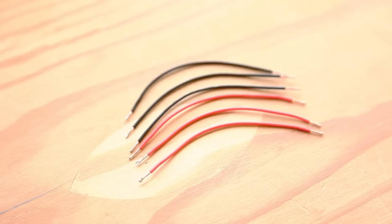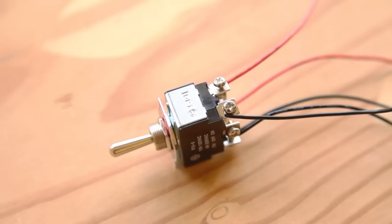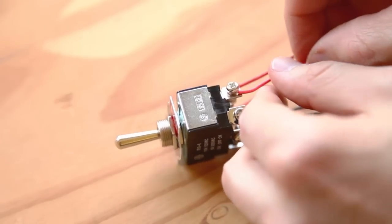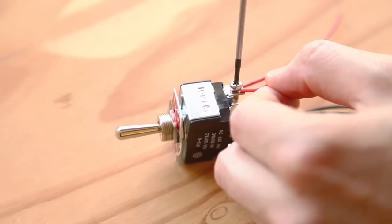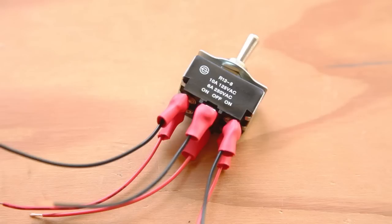Cut six four-inch wires, three red and three black, and strip the ends of each wire. Tin the stripped ends, then wrap each one around one of the six screw terminals on the switch. Tighten down the screw and insulate the connection with heat shrink tubing. One row of contacts should be all red wires and the other row all black.